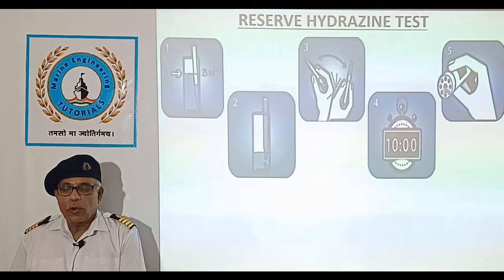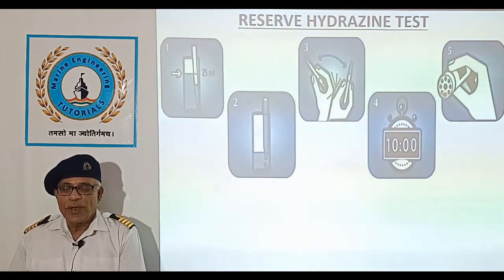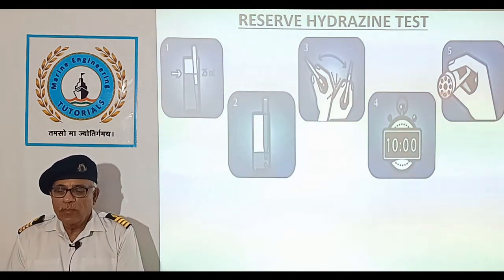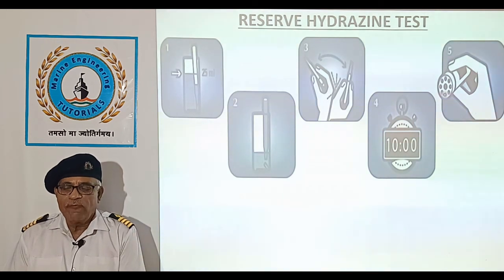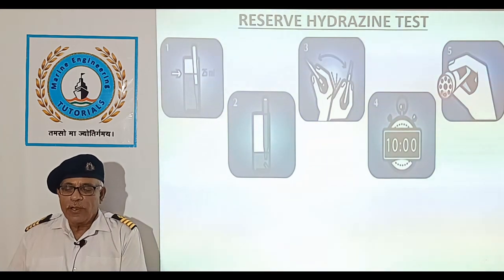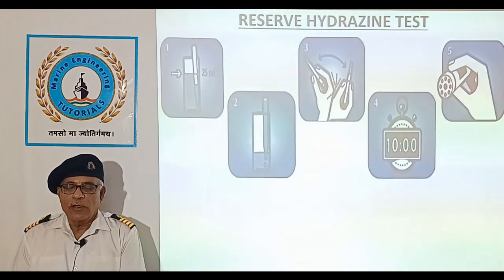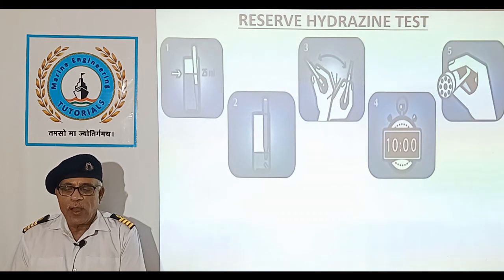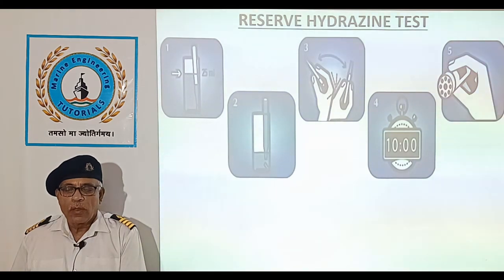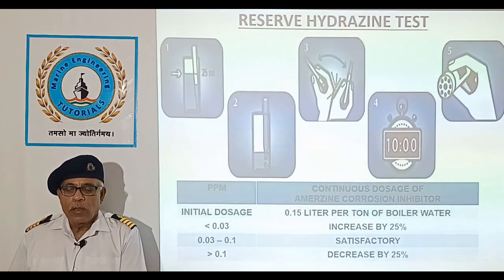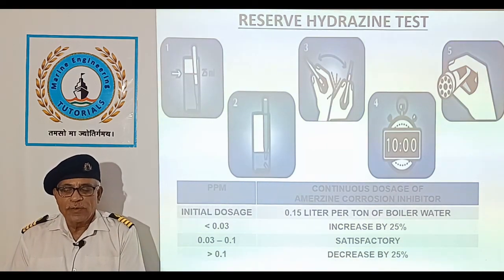Place the corrosion inhibitor ampoule flat and downwards in the center tube of the comparator. Direct the comparator towards a source of bright white light. Hold the comparator in a nearly horizontal position and rotate it until the color standard below the ampoule shows the closest match. Record the results.